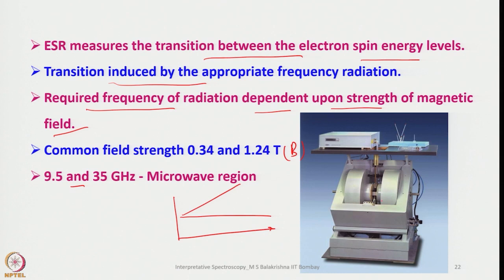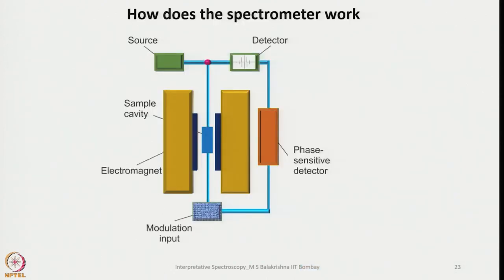This is how the typical EPR instrument looks. The magnetic field is here, the sample is kept here, and the signals go to the detector and then to the plotter for plotting the spectrum. The source and detector are here, the sample cavity is here, the electromagnet is here, and the phase sensitive detector and modulation input are also shown.